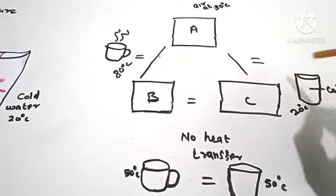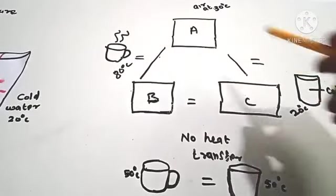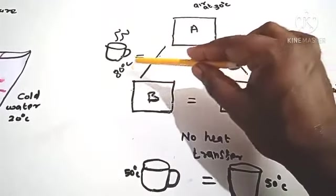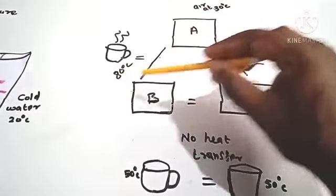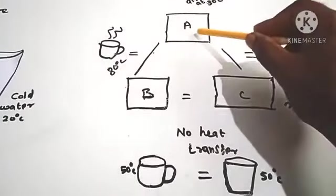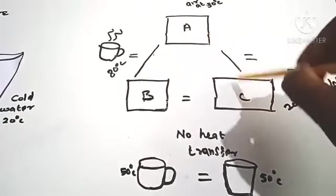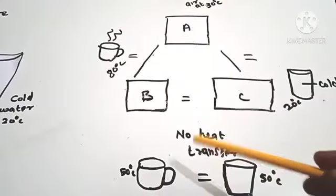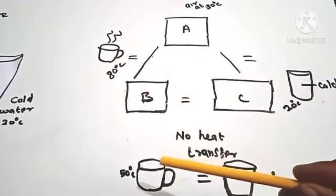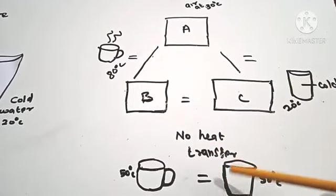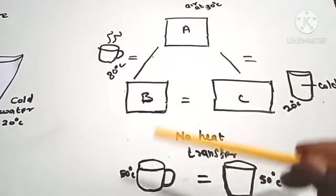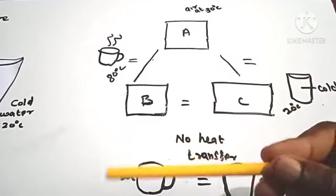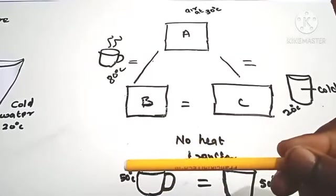When system A is at 30 degrees Celsius it reaches 50 degrees Celsius. If A and B are considered, it is 80 degrees Celsius initially. If A and B are thermally in equilibrium and A and C are thermally in equilibrium, then B and C will also be thermally in equilibrium. After some time, the hot coffee reaches 50 degrees Celsius and the cold coffee also reaches 50 degrees Celsius.